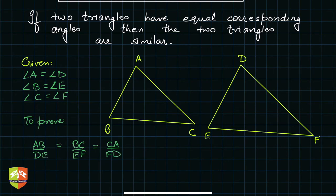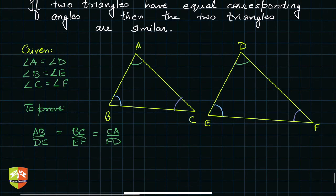Let me mark the equal angles using colors so they are easier to identify: angle B equals angle E, and angle C equals angle F. We have to prove AB/DE = BC/EF = CA/FD. For this we need some constructions, using the tools of congruent triangles, angle sum property, and the Basic Proportionality Theorem which we learned a few sessions ago.